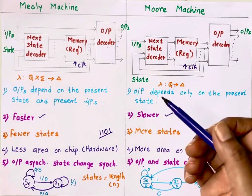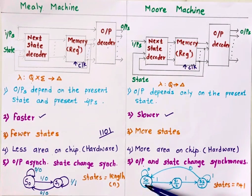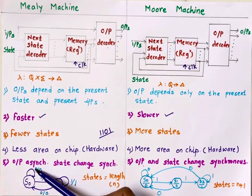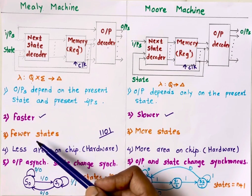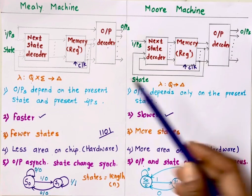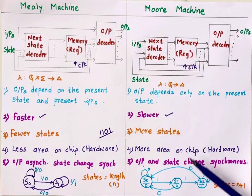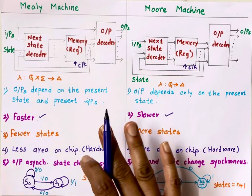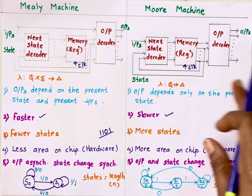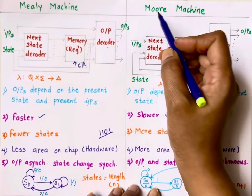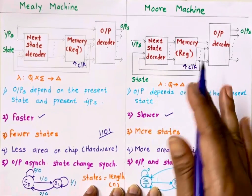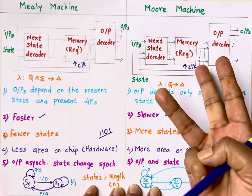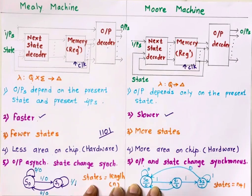To summarize: in a Moore machine output depends on present state, so for every state output is fixed. In a Mealy machine output depends on present state as well as present input, and that is why output is asynchronous — as soon as input changes, output changes — while Moore is synchronous and therefore slower. Mealy needs fewer states meaning less hardware, while Moore needs more hardware. You can remember this from the name itself: Moore and 'more' look the same — so Moore machine means more hardware, more power consumption, more states, and slower speed.